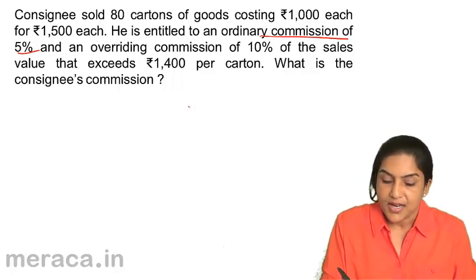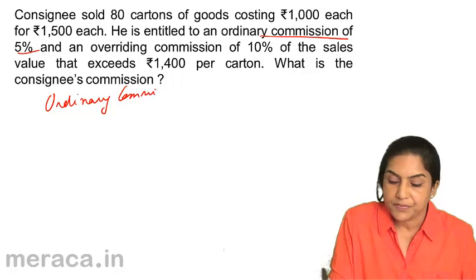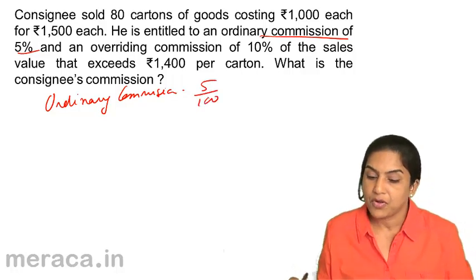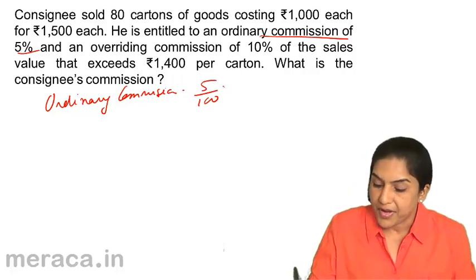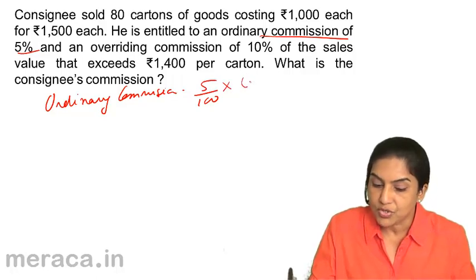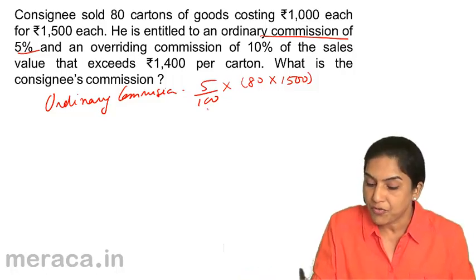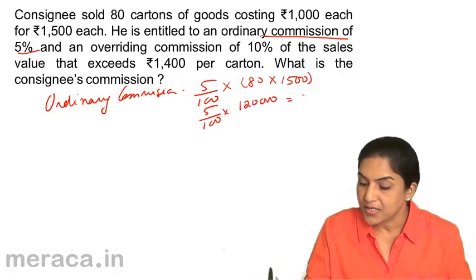So how do we compute this? Ordinary commission is simple. Ordinary commission is 5% of sales value. Sold 80 cartons costing 1,000 each for Rs. 1,500. So 5% of total sales. What is total sales? Total sales is 80 into 1,500 each. So 5% of 1,20,000, giving us 6,000.